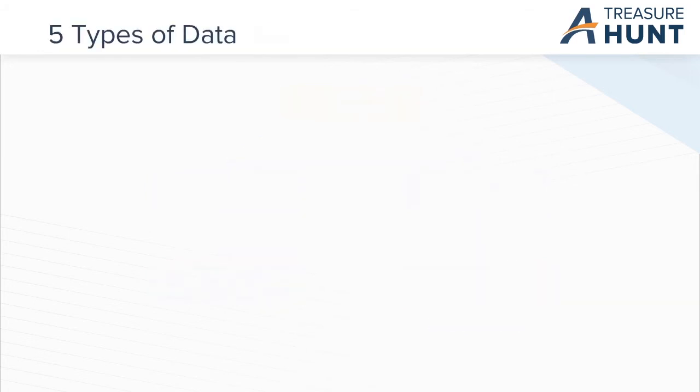Let's now talk about the types of data. Data is of five types, namely nominal, ordinal, interval, ratio, and quasi-interval. Nominal data measures without order.